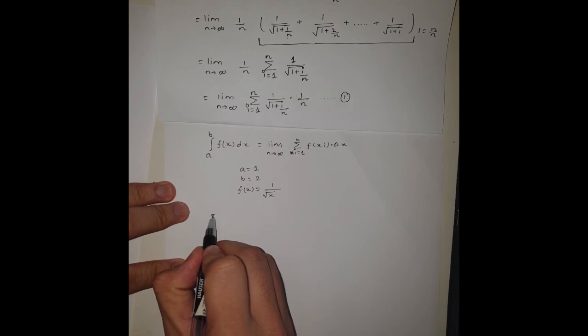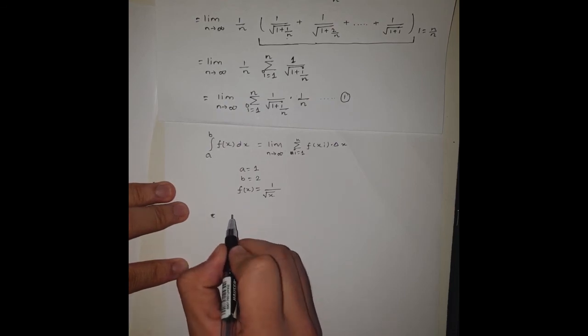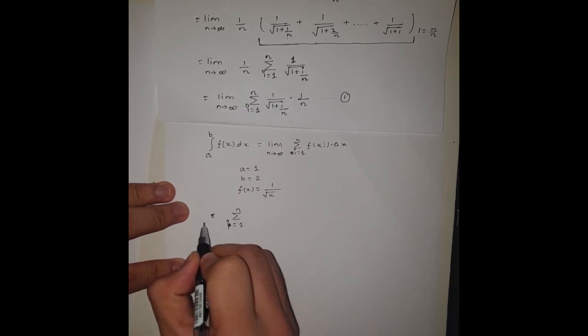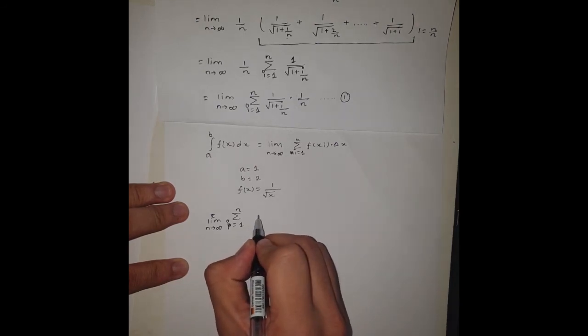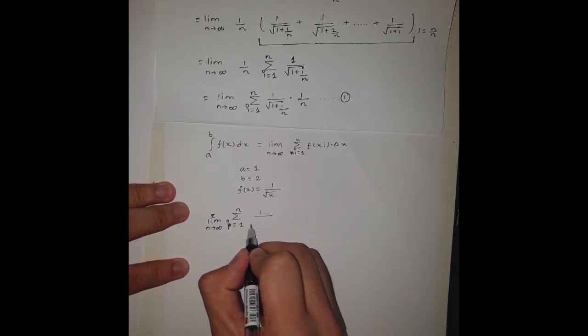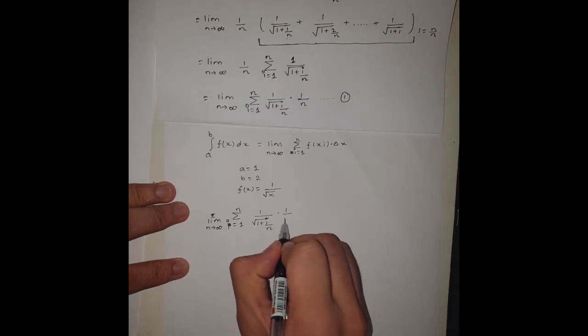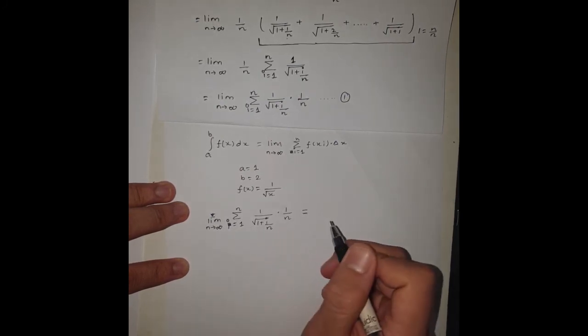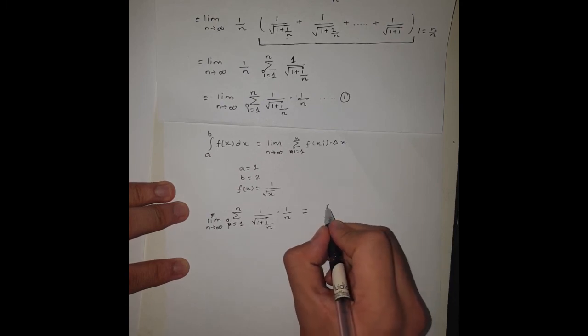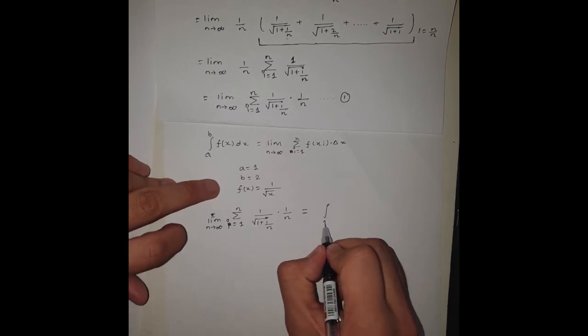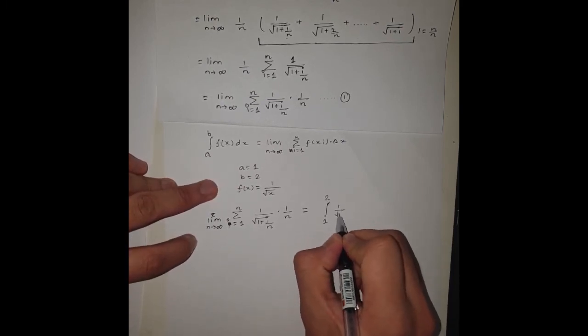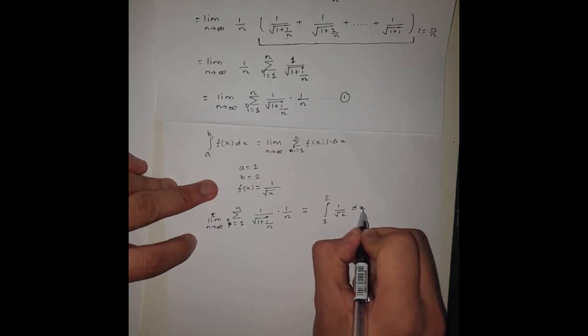Using the theorem, what we can conclude is this expression is going to be equal to the definite integral from 1 to 2 of 1 by square root of x, dx.